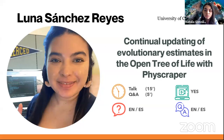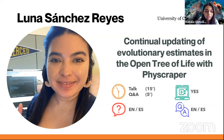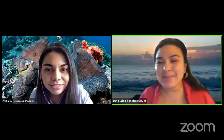Her talk will be 15 minutes long followed by a 5-minute Q&A. She will be happy to receive questions in English or Spanish and answer in either language. Dr. Luna Luisa Sanchez Reyes is a postdoc at the McTavish Lab at the School of Natural Sciences at the University of California, Merced. Her research interests include species diversification processes, timing of species origin, the interface between micro and macroevolution, open science, science communication, and reproducibility.